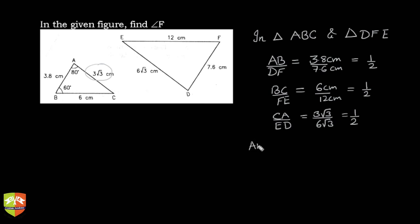AB by DF is equal to BC by FE is equal to CA by ED. Therefore, by SSS similarity criterion, we can say...